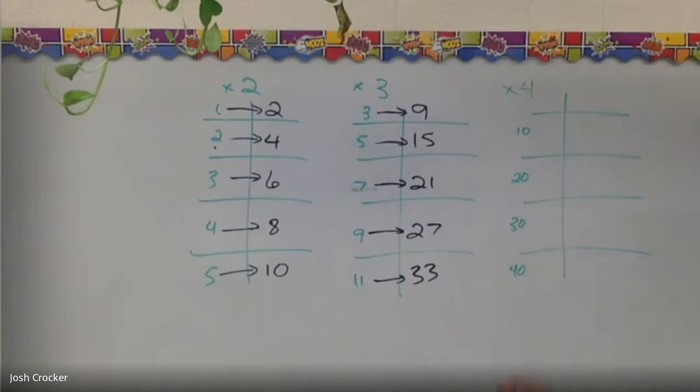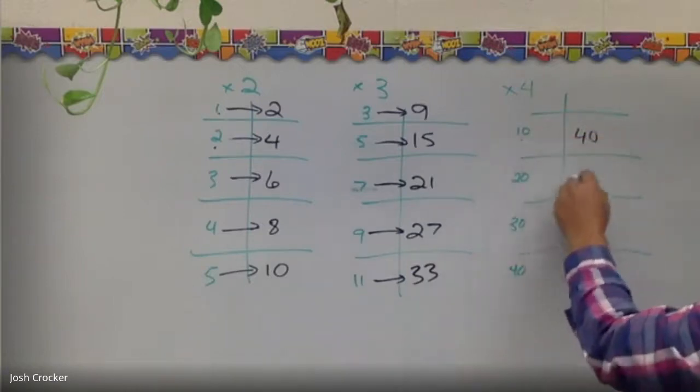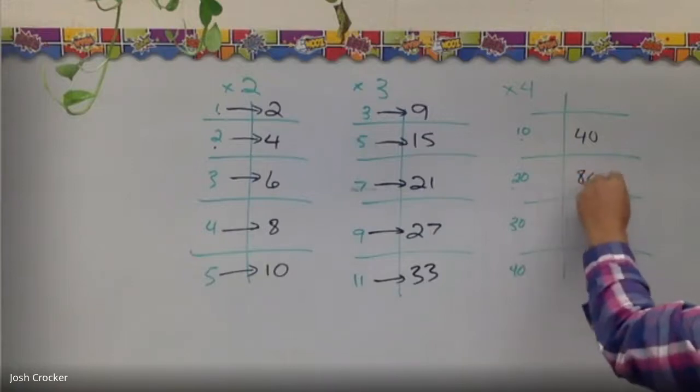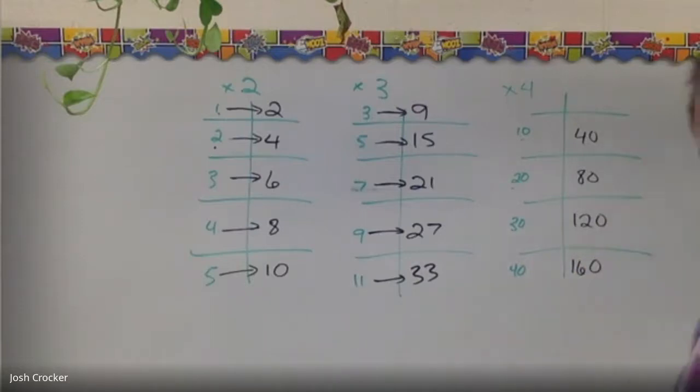Times 4, 10 times 4, 40, 20 times 4, 80, 120, 160. My numbers are going up and they're going up more and more. That's what multiplication looks like.